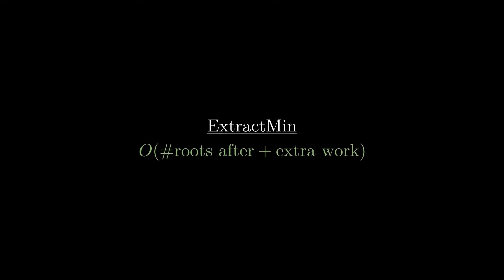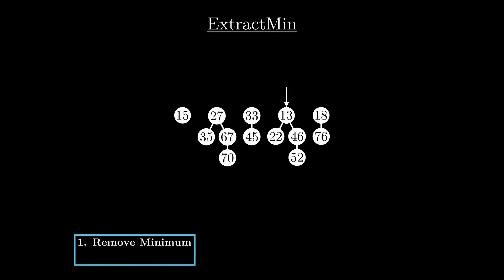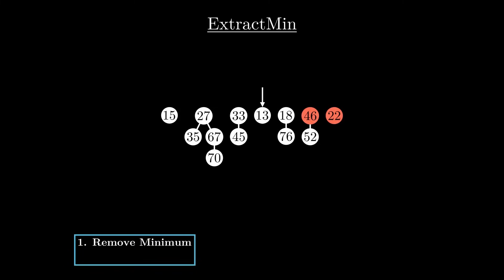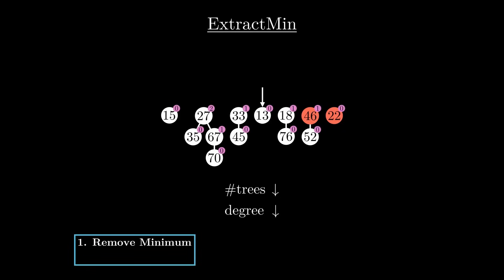Let's see how we can implement ExtractMin while keeping both these terms as low as possible. First, we need to delete the minimum node. But if we did that we would be left with some orphan child nodes. So let's first remove them one by one from the child list of the minimum node and insert them into the root list. This already requires some work depending on how many children the minimum has. Let's call the number of children of a node its degree. In this example all degrees are quite low, but we don't know yet how large node degrees might become as our heap grows. For now, let's assume there's some maximum degree, which gives us an upper bound for the work required in this phase.